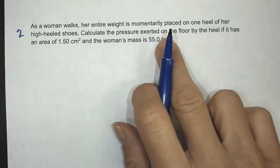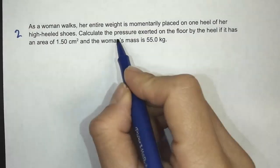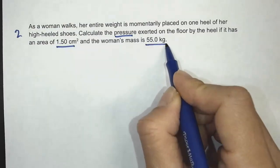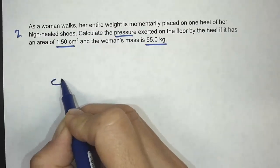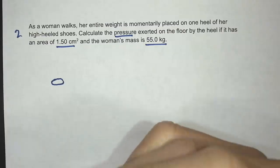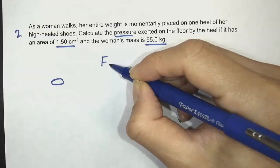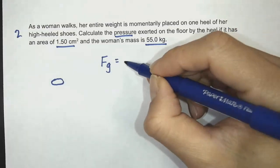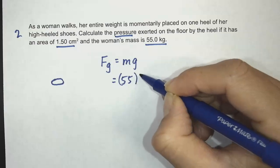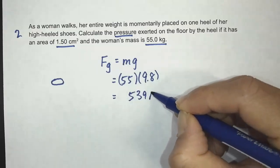Next question: as a woman walks, her entire weight is momentarily placed on one heel of her high-heel shoes. Calculate the pressure exerted on the floor by the heel if it has an area of 1.5 centimeters squared and the woman's mass is 55 kilograms. First I need to calculate the force: Fg equals mg, so 55 times 9.8, which gives 539 newtons.